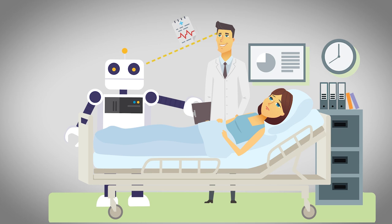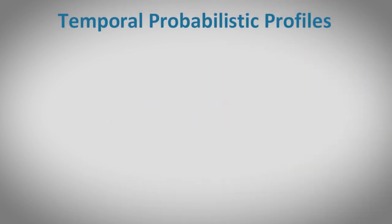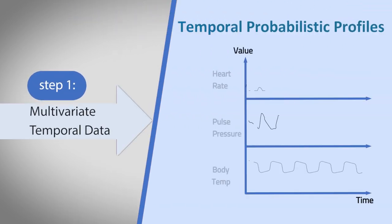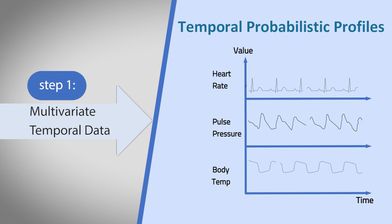First, raw time-stamped multivariate temporal data are acquired from various sensors. Then the data are abstracted into three interval-based concepts.